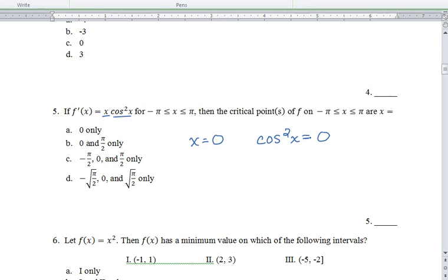So obviously all of the answer choices have the 0 part in it, so that's not an issue. The issue is the trig part. So cosine squared is equal to 0. We've got to think about where cosine is equal to 0. Cosine is equal to 0, cosine is the x-coordinate. So the x-coordinate is 0 at pi over 2 and at negative pi over 2. Because our interval goes from negative pi to positive pi, so you've got to include that negative value. So most people chose B. Five people chose B because they forgot the negative part.